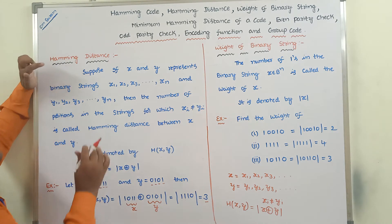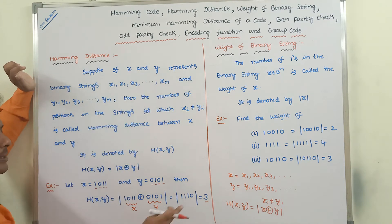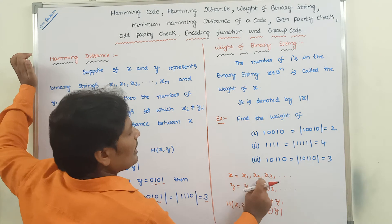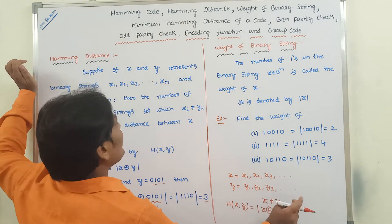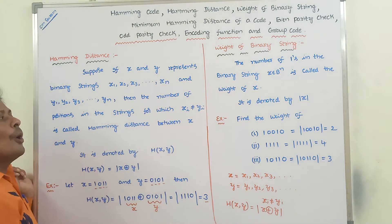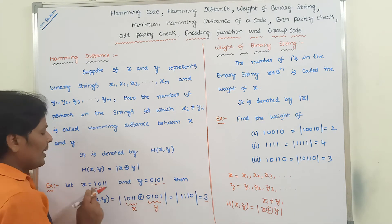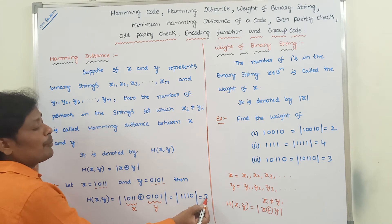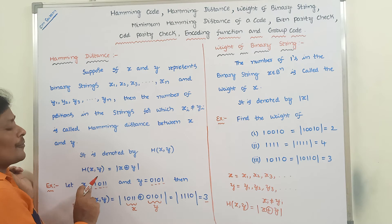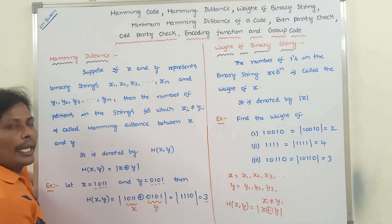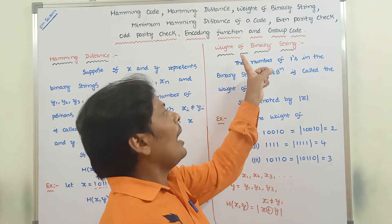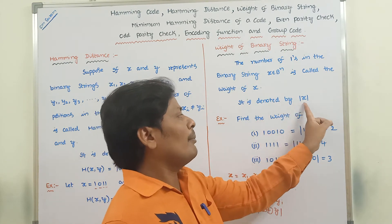So here we can state the definition. Suppose x and y represent binary strings, where x contains bits x1, x2, x3, etc., and y contains bits y1, y2, y3, etc. Then the number of positions in the strings for which x_i is not equal to y_i — that is the Hamming distance. Next, the weight of a binary string: the number of ones in a binary string represents its weight, denoted by mod(x).